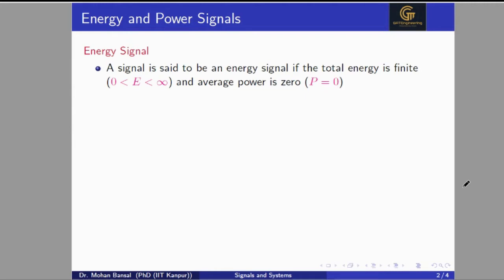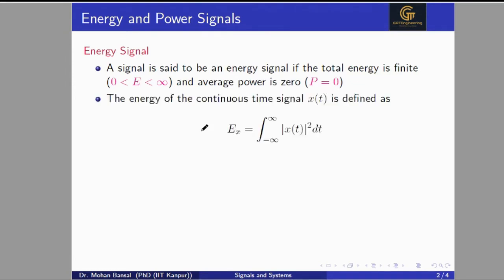Some signals are neither energy nor power signals, but we can visualize the signal to determine which type it is. A signal is said to be an energy signal if the total energy of the signal is finite and average power is 0. The energy of the signal can be computed by the integral from minus infinity to infinity of |x(t)|² dt. This energy is the area of the squared value of the signal.